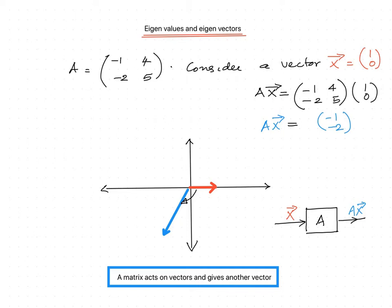Today's session is about eigenvalues and eigenvectors. We are all familiar with matrices as well as vectors. A vector is a quantity that has a certain direction. To represent a vector we can use a column matrix, as given here: x is equal to [1, 0]. It shows that x has a magnitude of 1 unit in the x direction and magnitude of 0 in the y direction. We may also call the two entries x11 and x12. Basically, what a matrix does is result in some transformation for a vector upon which it acts.